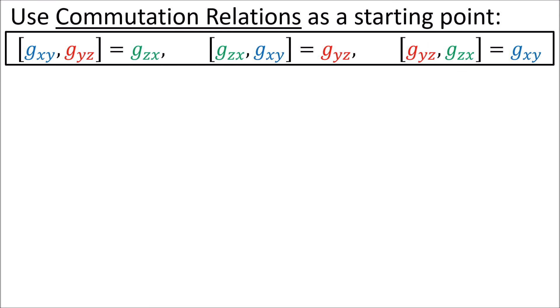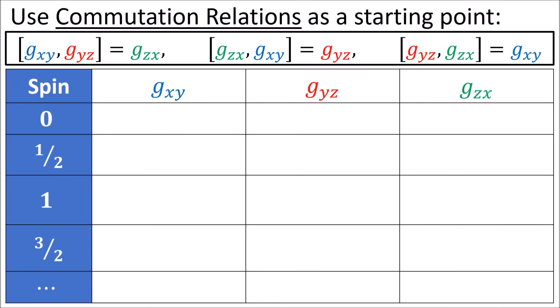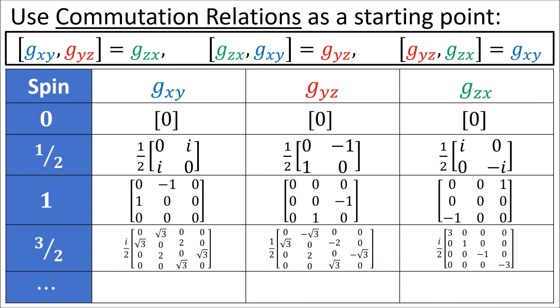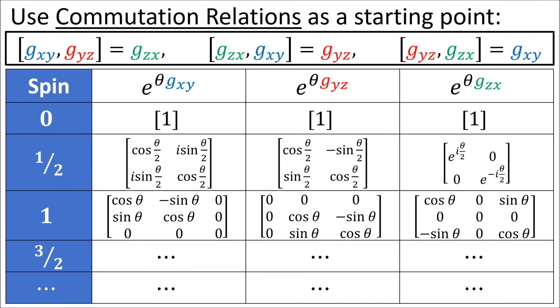If we use these commutation relations as a starting point, we can find many generator matrices of all different sizes that satisfy them. When we exponentiate these generators, we get rotation matrices for all the different particle spin types. The 3x3 matrices rotate the standard 3D vectors, the 2x2 matrices rotate polyspinors, and all the other matrices rotate particles with other spins. So looking at the different matrices that come out of this Lie algebra gives us a recipe for rotating particles with different spins in three dimensions.